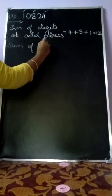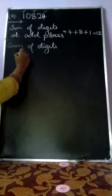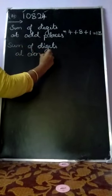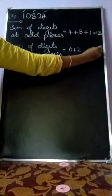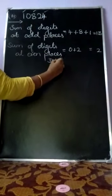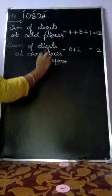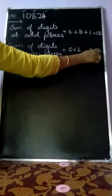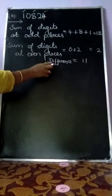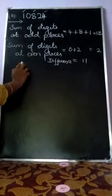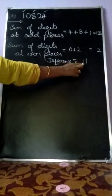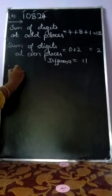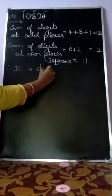Next, sum of digits at even places — even places are 2nd and 4th. So 0 plus 2 equals 2. Now the difference between odd place sum and even place sum: 13 minus 2 equals 11. The difference is either 0 or divisible by 11, so the given value is divisible by 11.